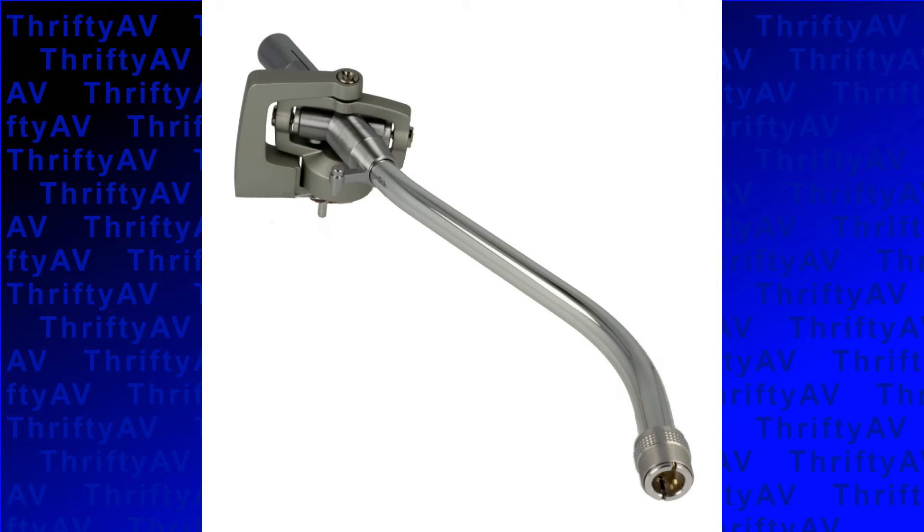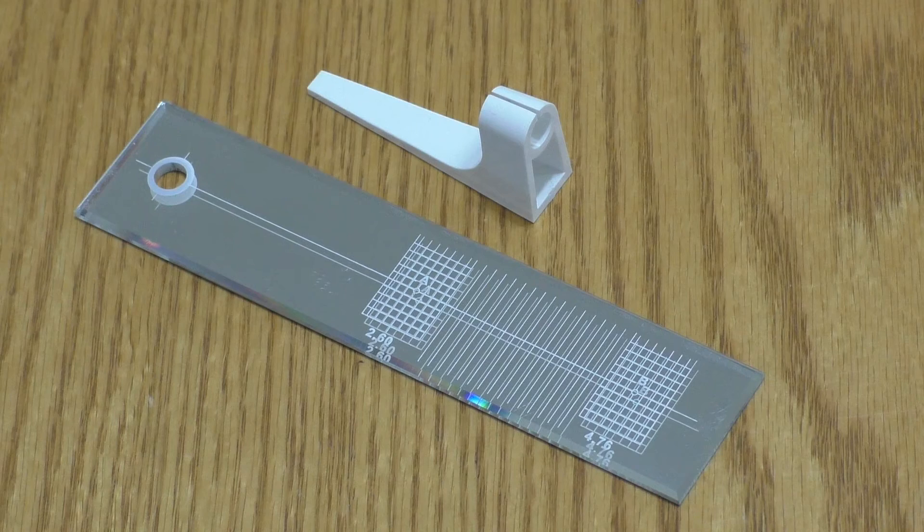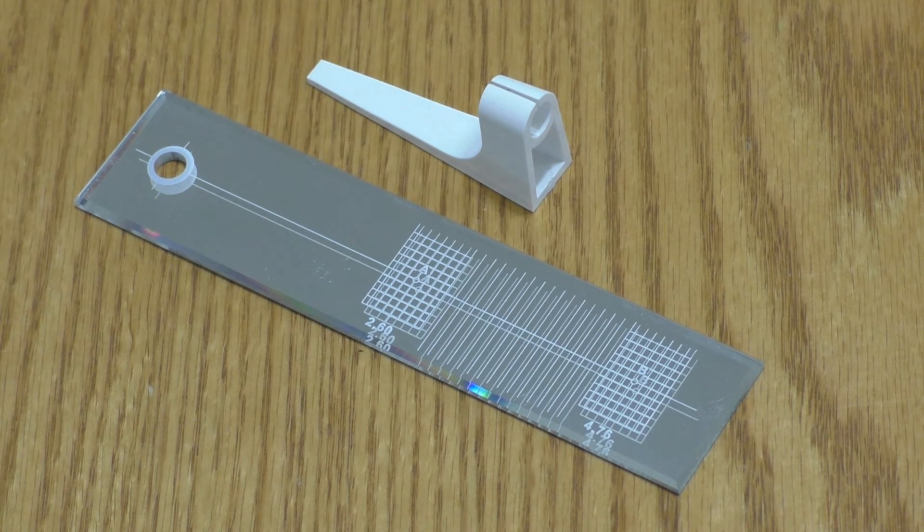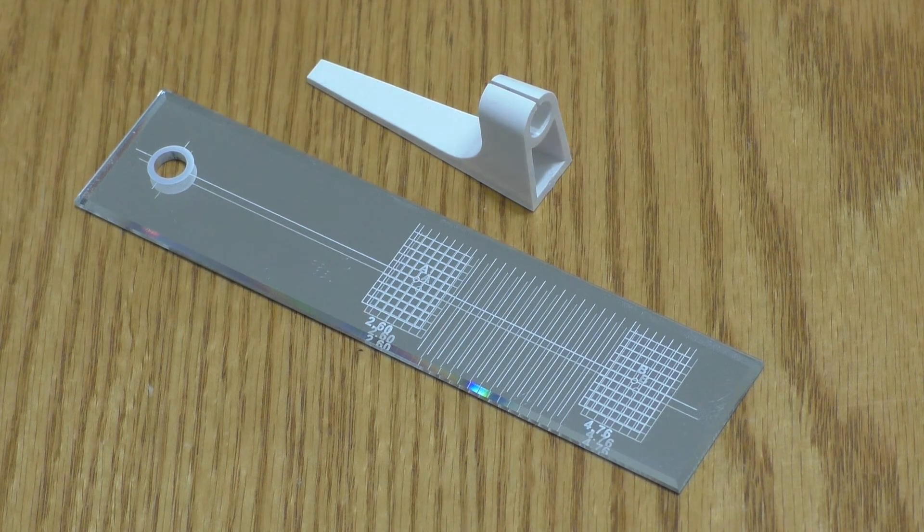Proper phono cartridge alignment ensures accurate reproduction of your music and prevents unnecessary wear on your vinyl records. There are several tools to help achieve the proper alignment. The S-shaped tonearm on my turntable has the same specifications as the tonearm on a Technics SL-1200. So I purchased two products designed for the SL-1200 to help me get the most accurate alignment possible.